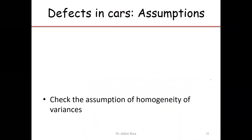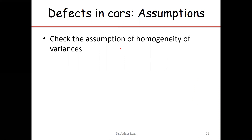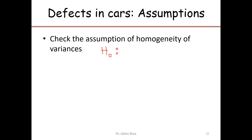The first assumption is homogeneity of variances. We must first check whether the variances are the same — that is, whether the population standard deviation of defects in model A equals that of model B and model C. These population standard deviations of the three brands of car should be the same.